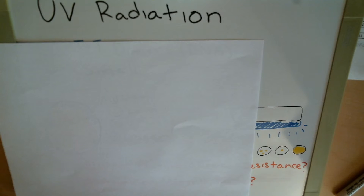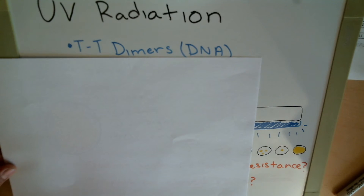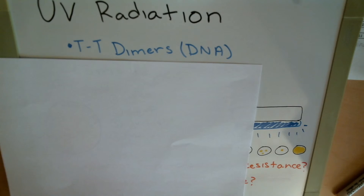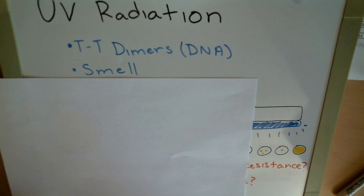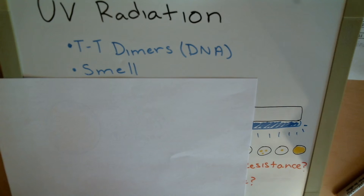Now let's go over the UV radiation portion of the lab. In lecture, you went over thymine-thymine dimers — a mutation in DNA caused by ultraviolet light — and that's exactly what we're going to do here. In practical terms, if you have a bad-smelling towel and leave it out in the sun for a few hours, the smell goes away because of these thymine-thymine dimers: the bacteria die off and no longer produce that smell.